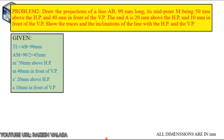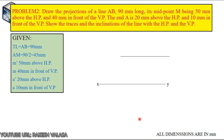Let us see the solution. First draw the XY line. We know the end point A projections and also the midpoint M projections. By using these two projections, we will construct the full length of AB. First draw the midpoint M projections: M dash is 50mm above the HP. Now draw the locus line — this is the locus of M dash.